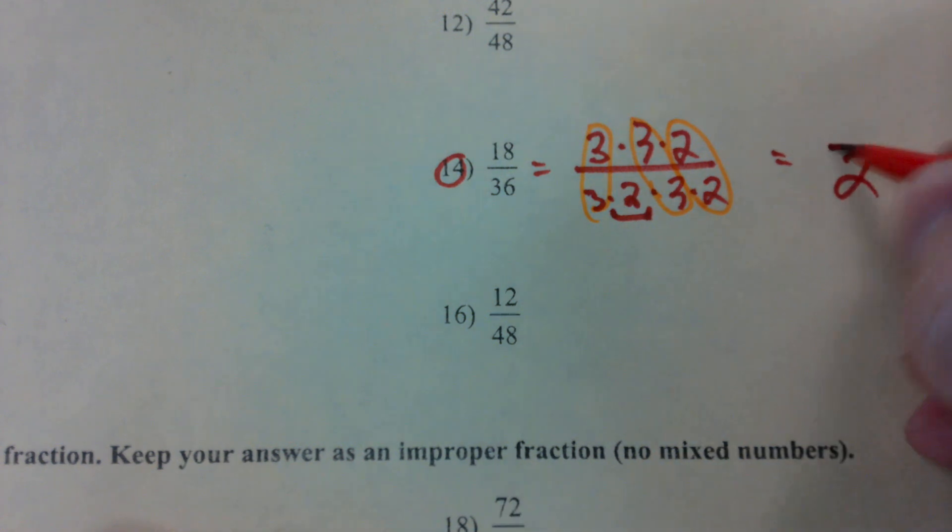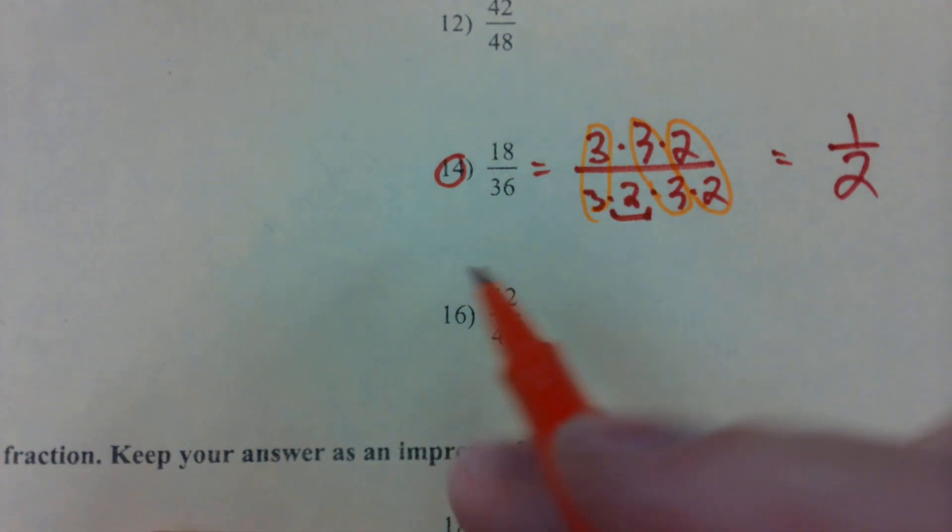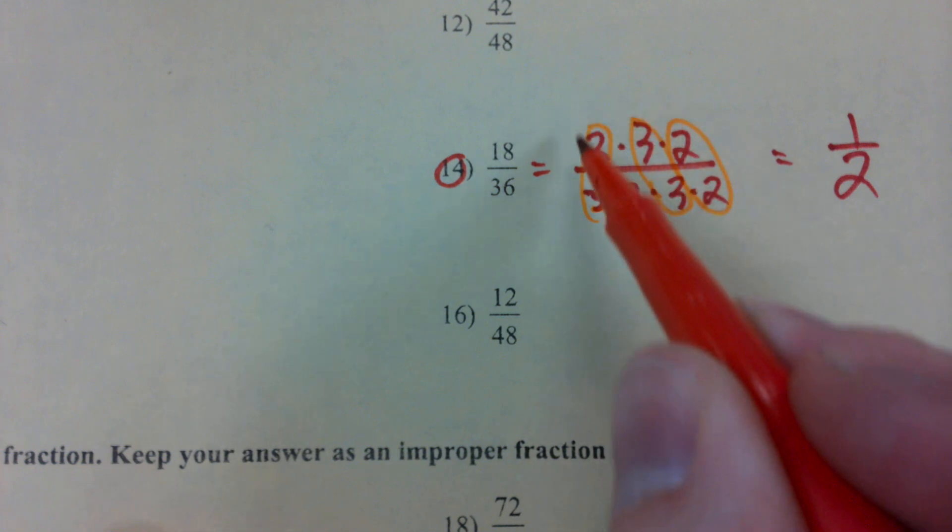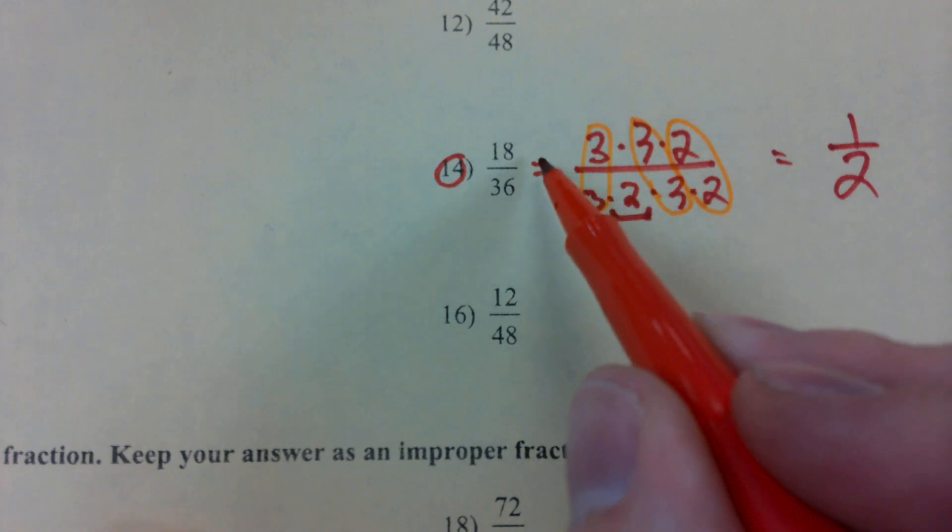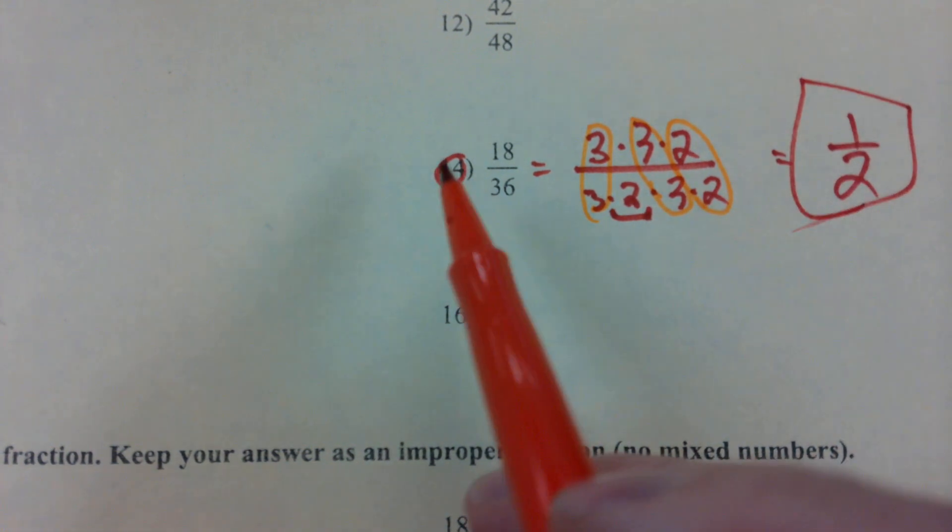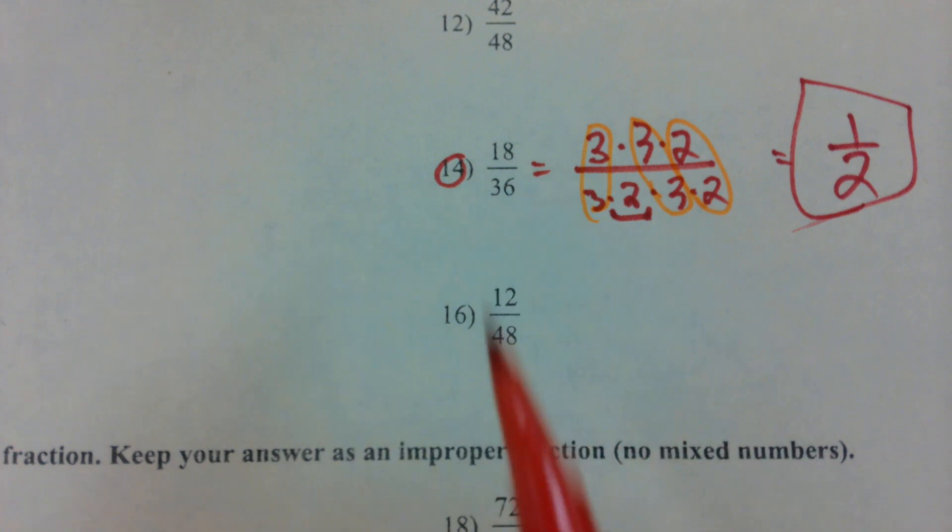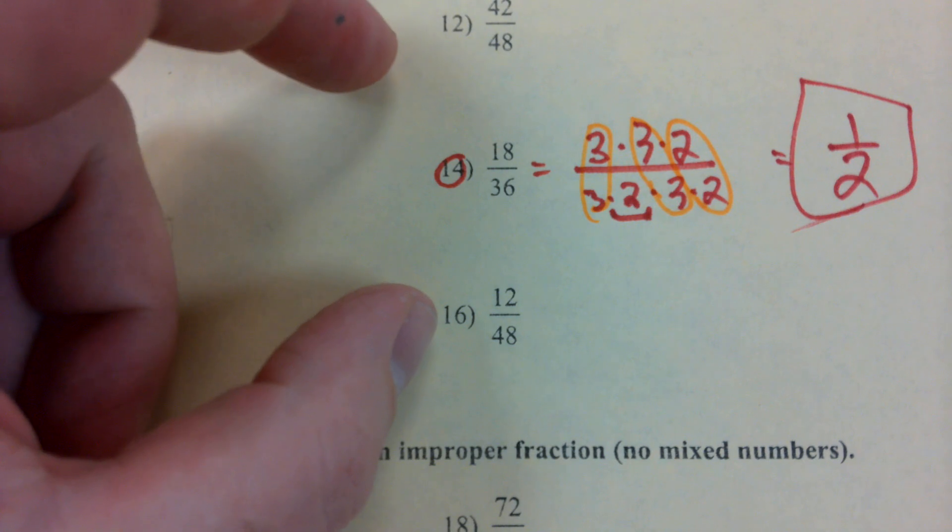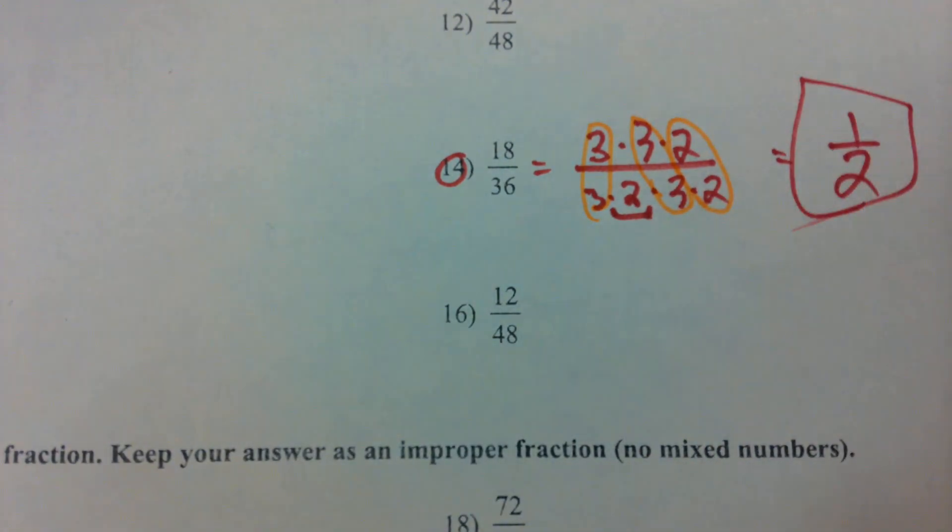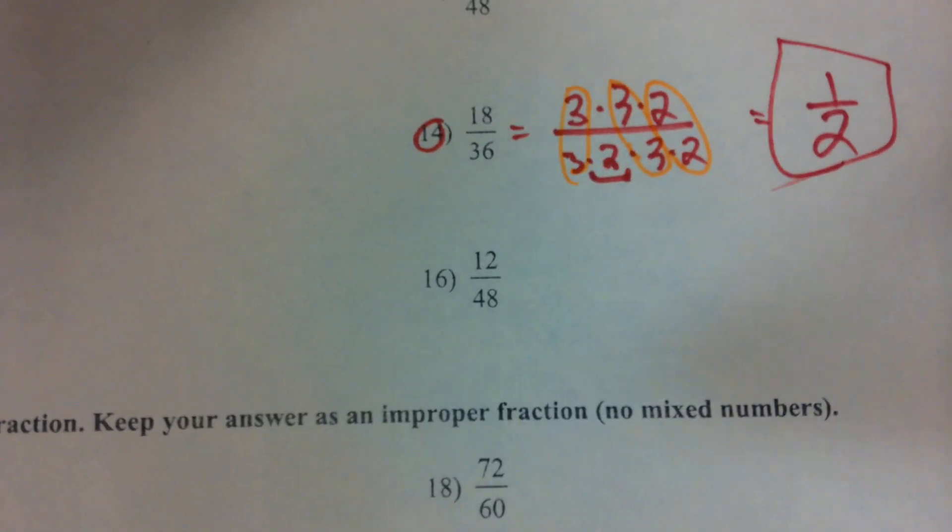Even though all of these factors on top canceled out, we cannot forget that this is still a fraction. So if they all cancel out, we're just left with one. And our answer is one half. That makes sense, right? Eighteen is half of thirty-six. Questions on breaking up the fractions like that? Again, that's going to be a common theme when we get to our new lesson, so definitely make sure you understand what's going on there.